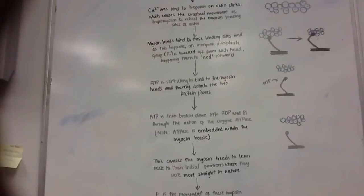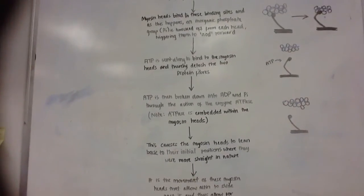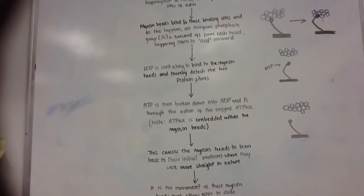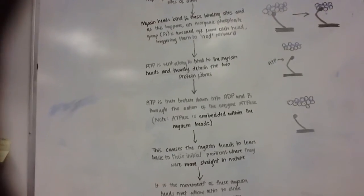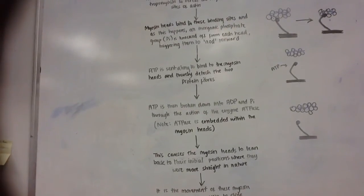ATP, which is just circulating around in the muscle cell, is sent along to bind to the myosin heads and thereby detach the two protein fibres.